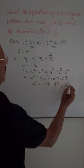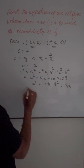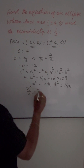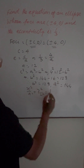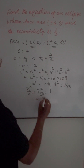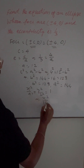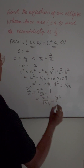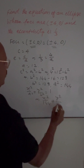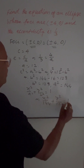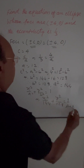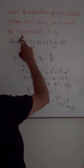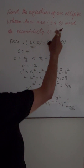The equation of the ellipse is x square by a square plus y square by b square equals 1. Substituting, this becomes x square by 144 plus y square by 128 equals 1. This is the required equation of the ellipse whose foci are plus minus 4, 0 and the eccentricity is 1 by 3.